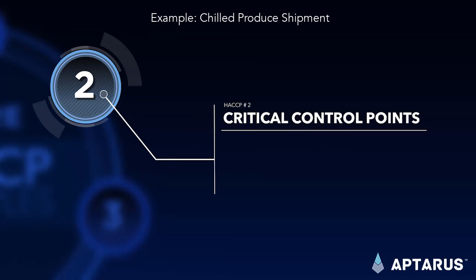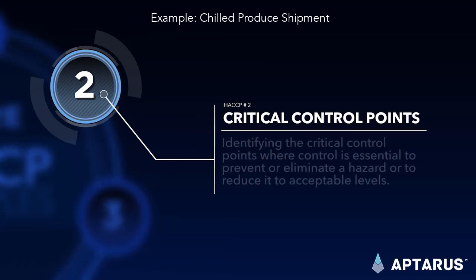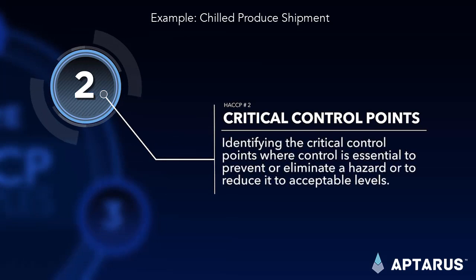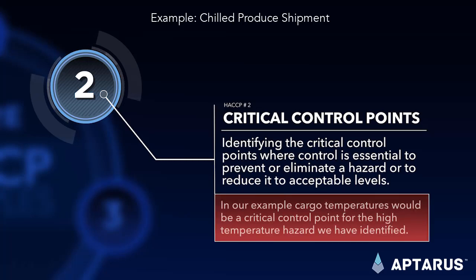Critical control points – identifying the critical control points where control is essential to prevent or eliminate a hazard, or to reduce it to acceptable levels. In our example, cargo temperatures would be a critical control point for the high temperature hazard we have identified.